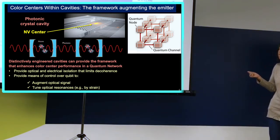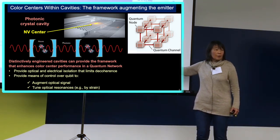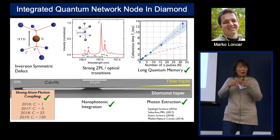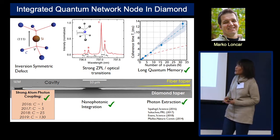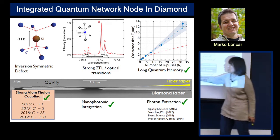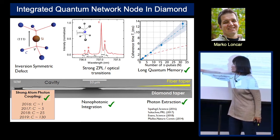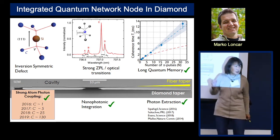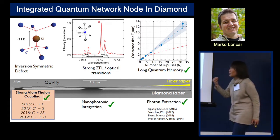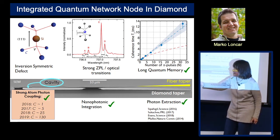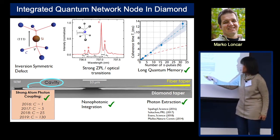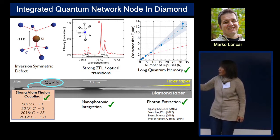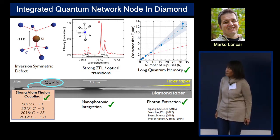In expanding on the idea of a framework, with Marco's group, here is an example of embedding a silicon vacancy within a diamond photonic crystal cavity — the framework that enhances the optical signal of that silicon vacancy so that you can get a strong zero-phonon line. This cavity naturally lends itself to the creation of a waveguide. This diamond taper sends out the photon signal and that photon signal can be coupled into a fiber taper and so the photon signal read out.